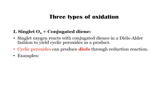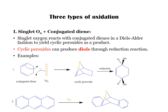Under Mode 2 we have three types of oxidation. In Type 1, singlet oxygen interacts with a conjugated diene in a Diels-Alder fashion — a 4+2 addition reaction — yielding a cyclic peroxide as a product. The mechanism is concerted, not radical. The cyclic peroxide can then undergo reduction to produce diols.